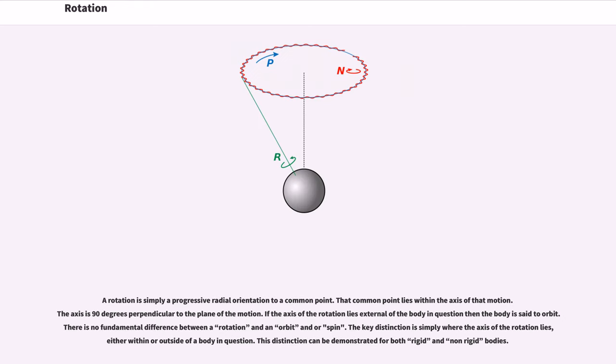A rotation is simply a progressive radial orientation to a common point. That common point lies within the axis of that motion. The axis is 90 degrees perpendicular to the plane of the motion. If the axis of the rotation lies external of the body in question then the body is said to orbit. There is no fundamental difference between a rotation and an orbit and or spin. The key distinction is simply where the axis of the rotation lies, either within or outside of a body in question.